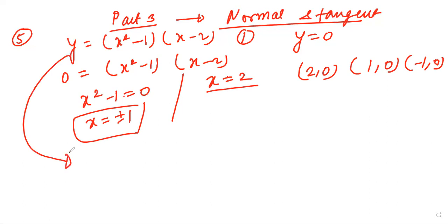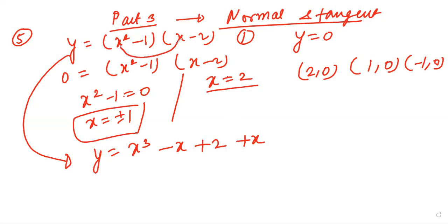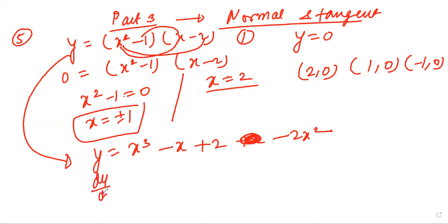Now differentiate this equation. So y equals — please multiply this term — so it will be x cubed minus x minus 2x squared. Next will be minus 2x squared. Now differentiate dy by dx, then you will get 3x squared minus 1 plus constant is 0, so it will be minus 4x.